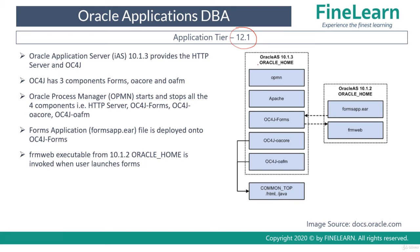In release 12.2 there are two important products: Fusion Middleware 11g and Oracle Application Server 10.1.2. The Oracle Application Server 10.1.2 is the same product present in release 12.1, containing the formsapp.ear file. In 12.1, instead of Fusion Middleware 11g, we have Oracle Application Server IAS version 10.1.3, which provides Apache and OC4J components.